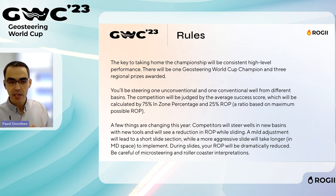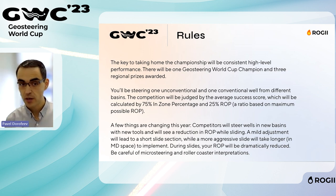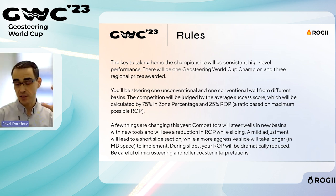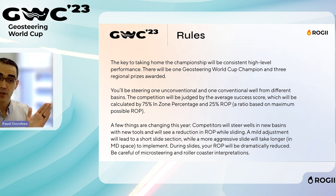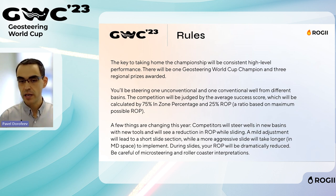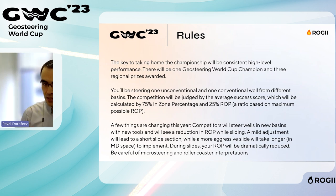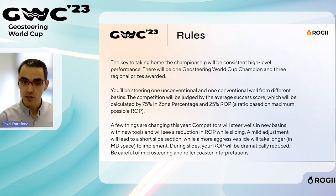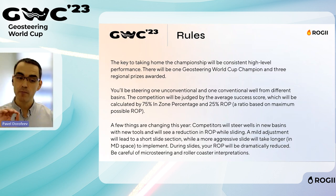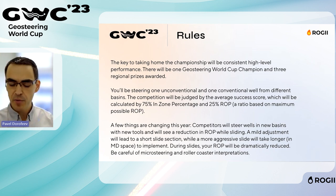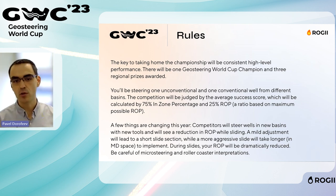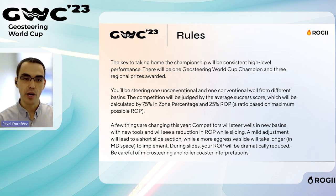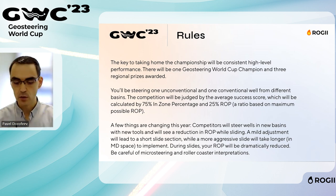For the rules and criteria to determine the best geosteerer in the world, there are two criteria. The first is zone percentage — you need to keep your well in the target zone as much as possible, contributing 75% to your final score. The other 25% is ROP (rate of penetration). This year ROP will be dramatically reduced during slides, so you need to reduce or avoid micro-steering and avoid roller-coaster interpretation.